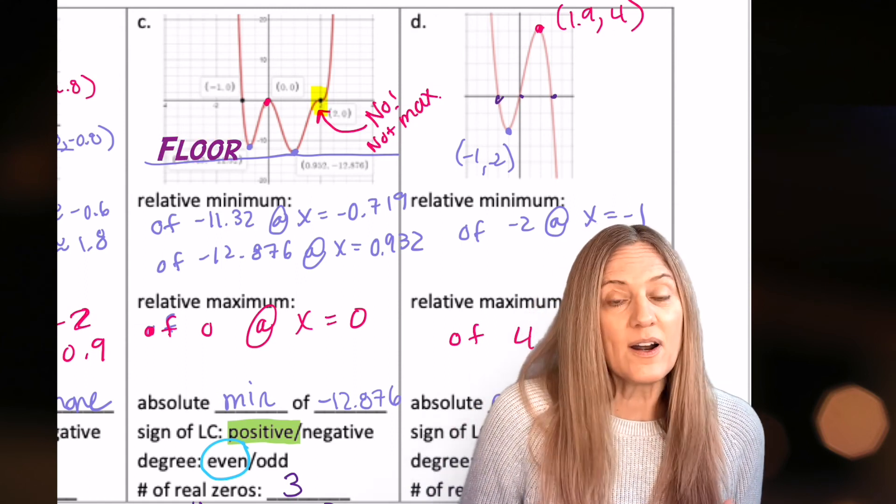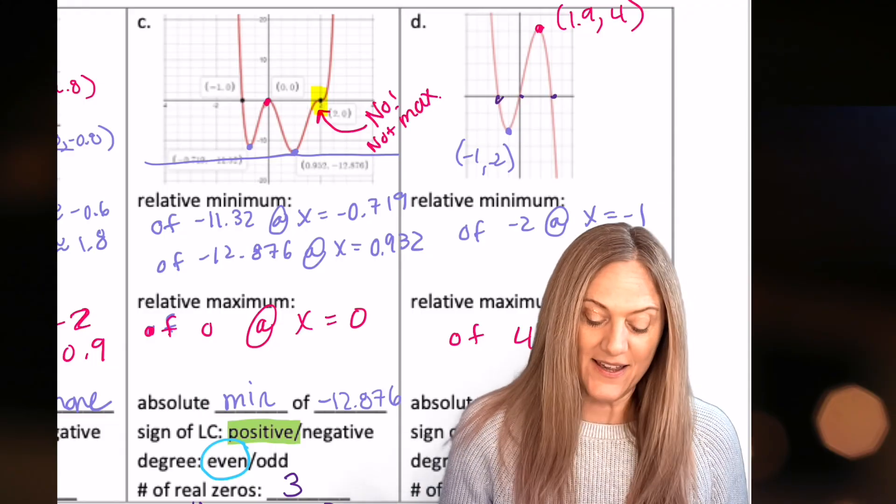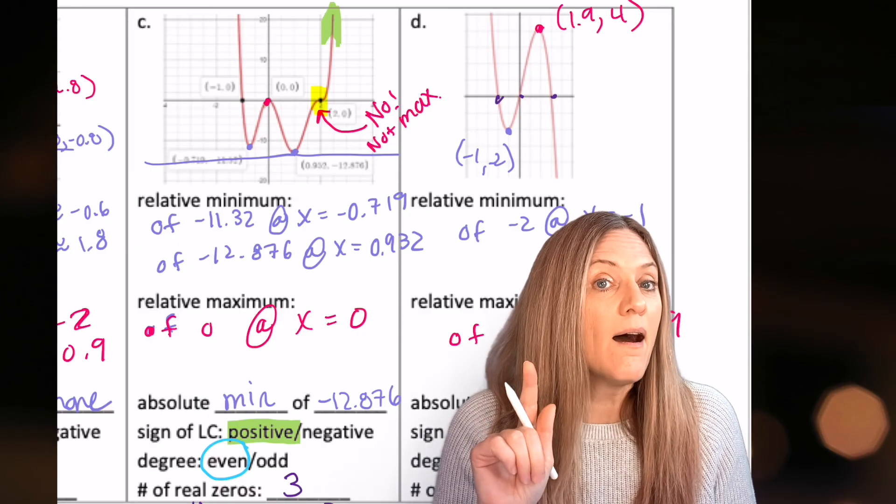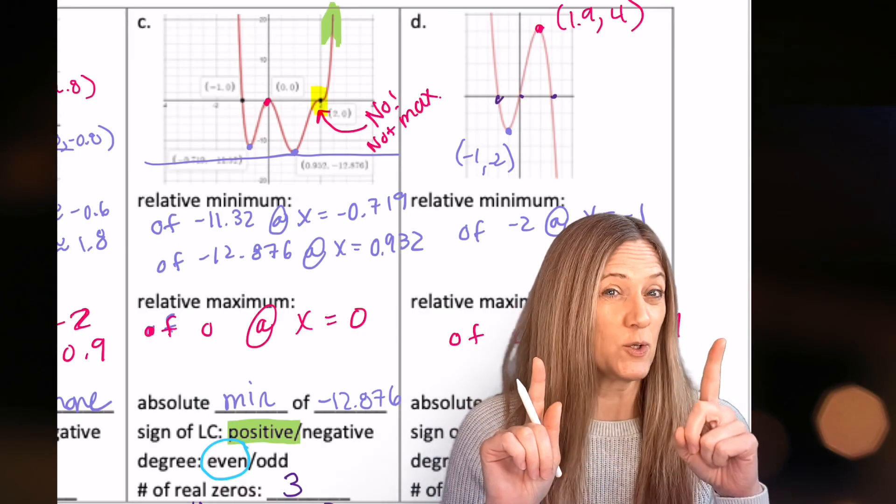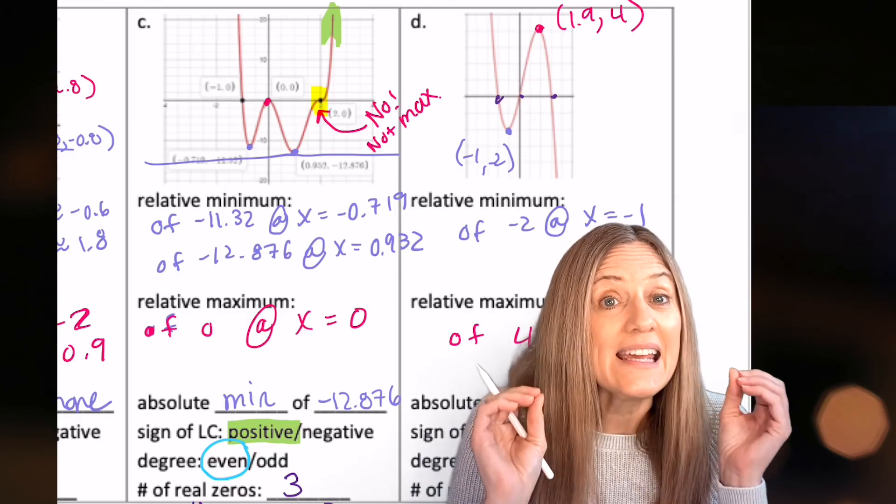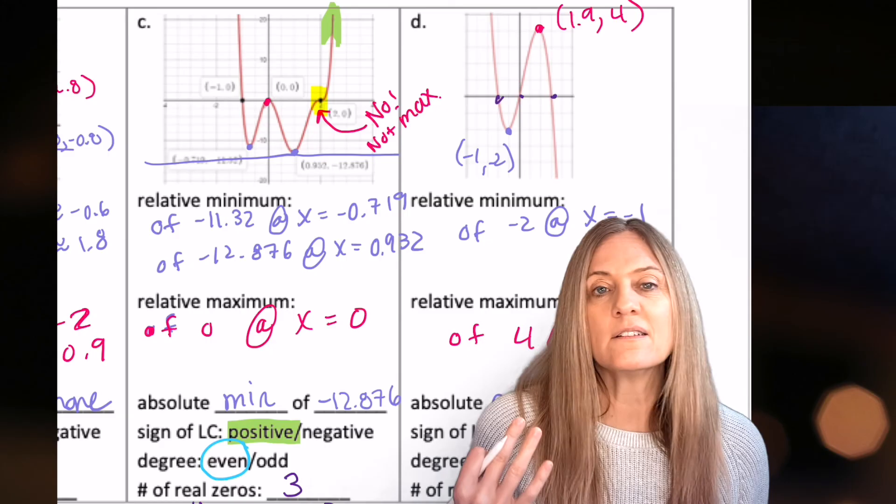We do have an absolute min on this. This one has a floor, an absolute min of about negative 12.876. The sign of the leading coefficient is positive because it ends up. And we noticed that the story started the same up. So if it's an up, up, it has to be an even degree polynomial. Last, we have three real zeros.